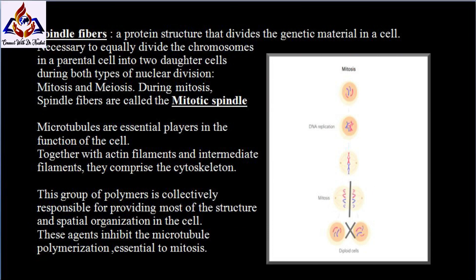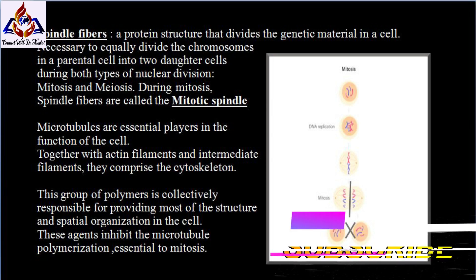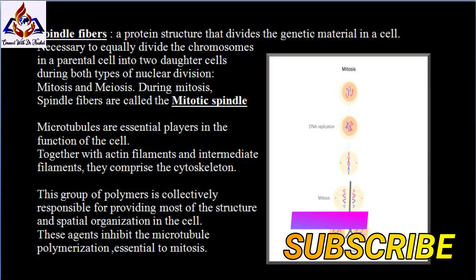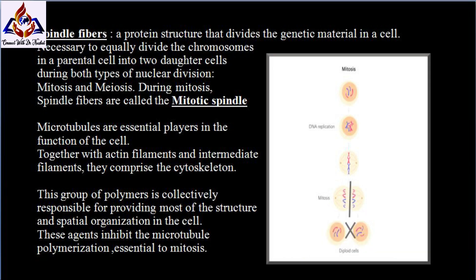Spindle fibers form a protein structure that divides the genetic material in a cell. The spindle is necessary to equally divide the chromosomes in a parental cell into two daughter cells during both types of nuclear division: mitosis and meiosis. During mitosis, the spindle fibers are called the mitotic spindle. It inhibits the microtubule polymerization which is essential to mitosis.